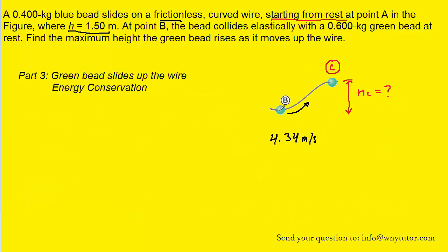As before in part one, we're going to use energy conservation to determine how high up this wire the green bead will travel. Let's not forget that at this point, this is right after the collision, the initial speed of the green bead is 4.34 meters per second. Keeping that in mind, let's write out the energy conservation formula again.